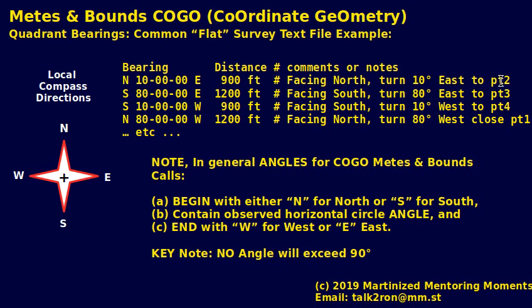Point number 1 is applied as your point of beginning or starting point. The second line is south, 80 degrees, 0 minutes, 0 seconds east, 1200 feet — meaning facing south, turn 80 degrees east and arrive at point number 3. This goes on sometimes for hundreds of lines depending on the boundary.